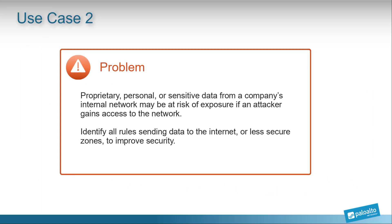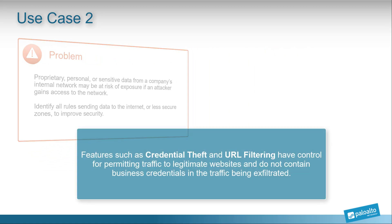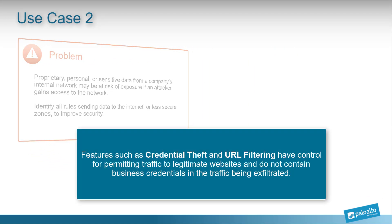Proprietary, personal, or sensitive data from a company's internal network may be at risk of exposure if an attacker gains access to the network. To prevent and restrict this from happening, identify all rules sending data to the internet or less secure zones to improve security. Features like credential theft and URL filtering have greater control on permitting traffic to legitimate websites and ensure business credentials are not contained in traffic being exfiltrated.